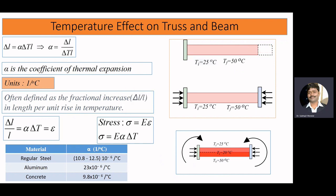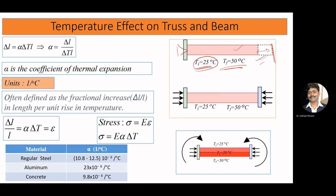If you have a truss element and the temperature changes from t-initial to t-final, you will observe that the material is going to elongate. Since there is no resistance and no support, there is no stress developed in the material — there will be elongation, but no stress induced. Now, if we add a support on the other side, since we are not allowing the material to deform, there will be stress in the material.